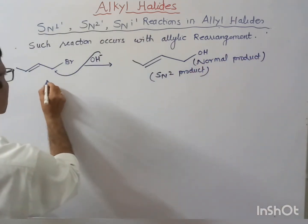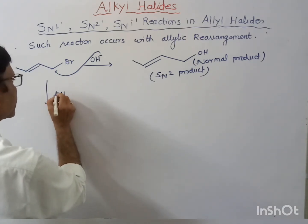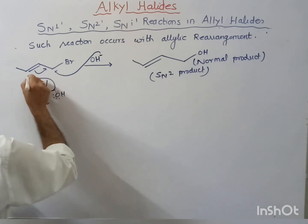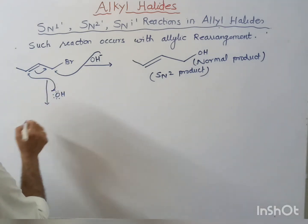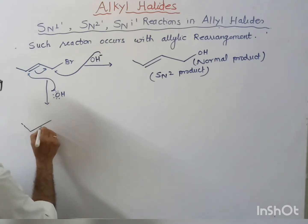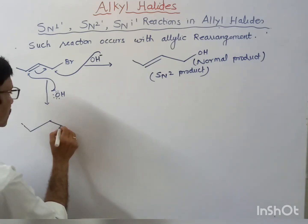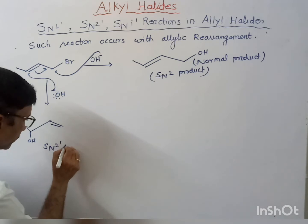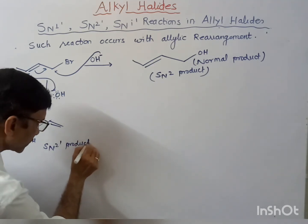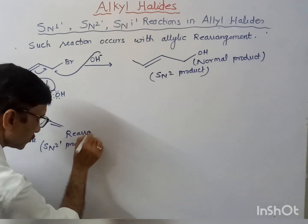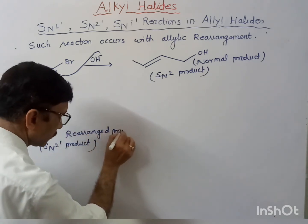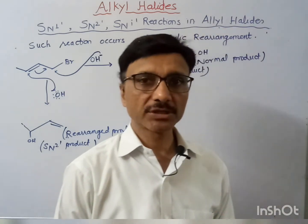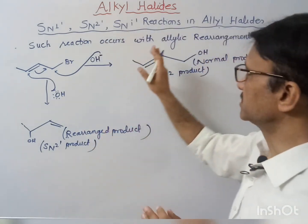If the same nucleophile attacks from the other side — the far end of the allylic system — then this is called the SN2' product, because the product is obtained after rearrangement. So this covers the SN1' and SN2' reactions taking place in allylic halides.